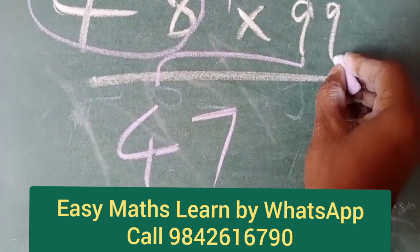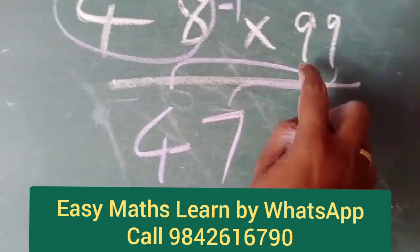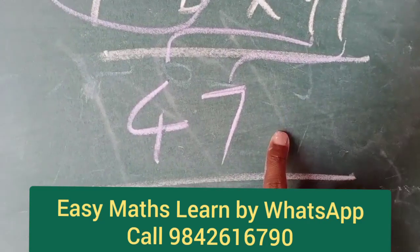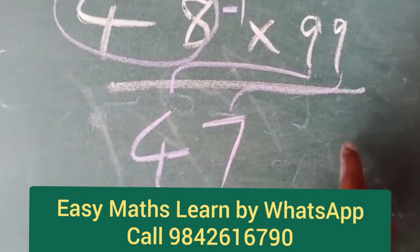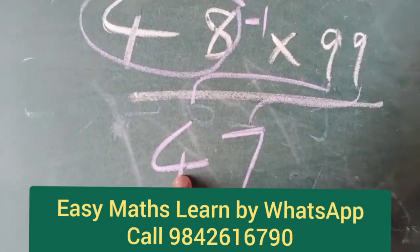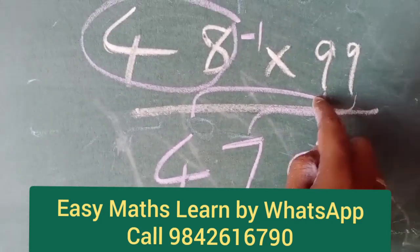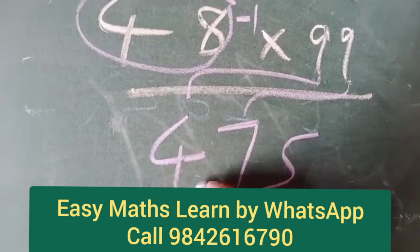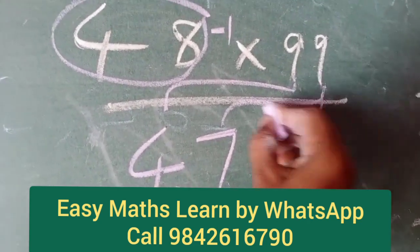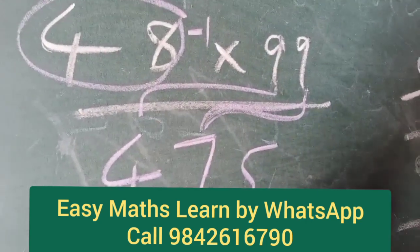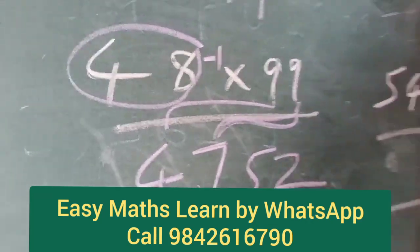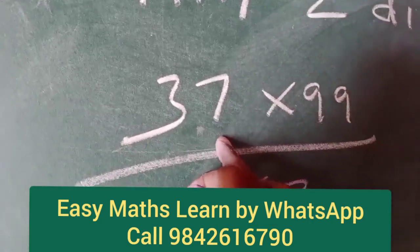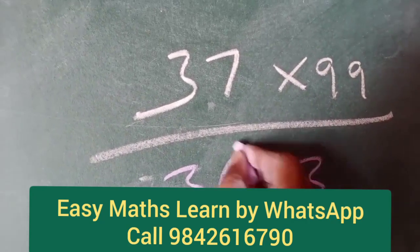9 minus 7. Here it is. 9 plus 4 minus. Here it is. 9 plus 7 minus. Now 9 minus 4: 5. Each digit minus from 9. 9 minus 4: 5. 9 minus 7: 2. And this is — 37 minus 1: 36. And so the first half.